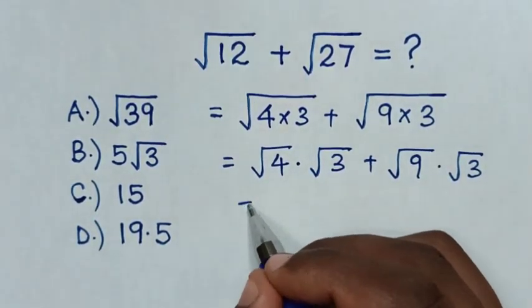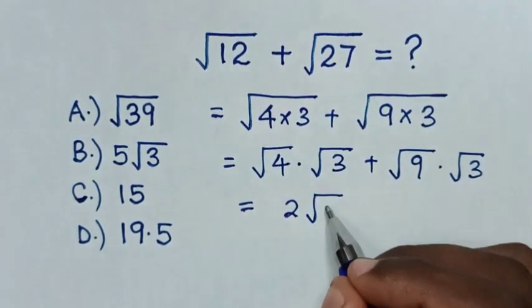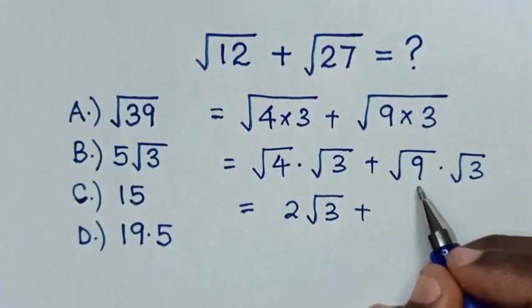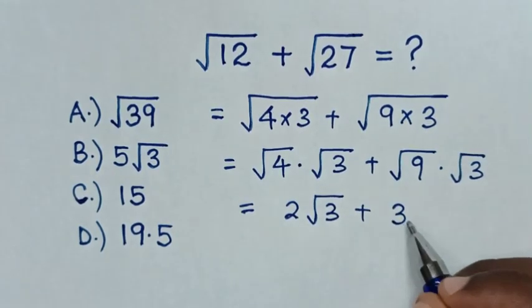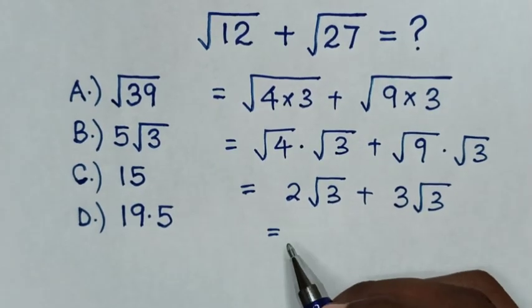Then this will be equal to square root of 4 is 2, then times square root of 3, then plus square root of 9 is 3 times square root of 3.